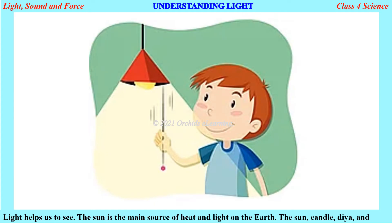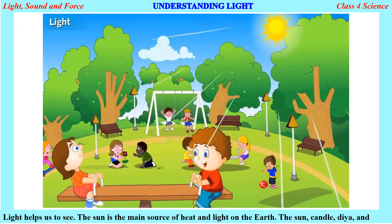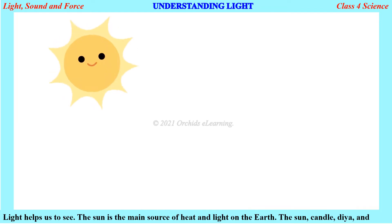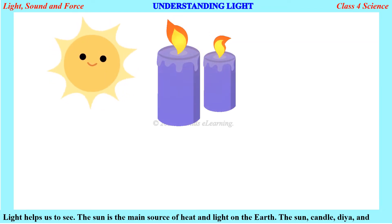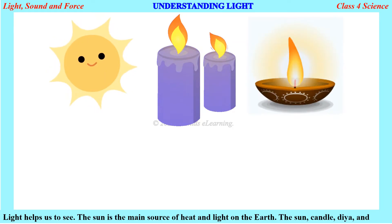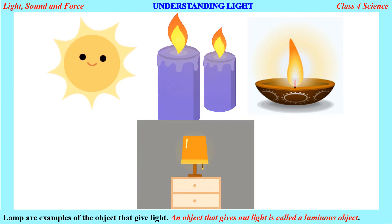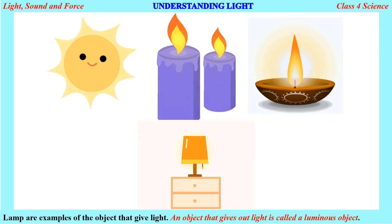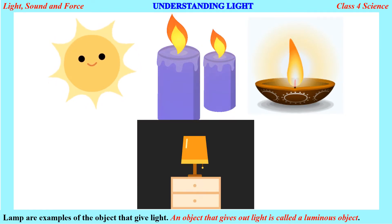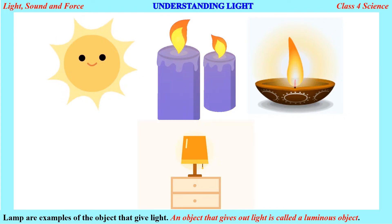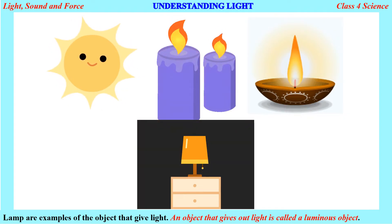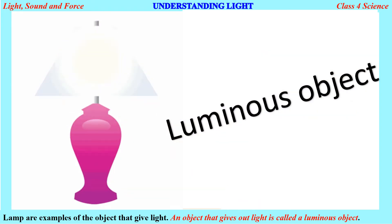Understanding light: Light helps us to see. The Sun is the main source of heat and light on the earth. The Sun, candle, and lamp are examples of objects that give light. An object that gives out light is called a luminous object.